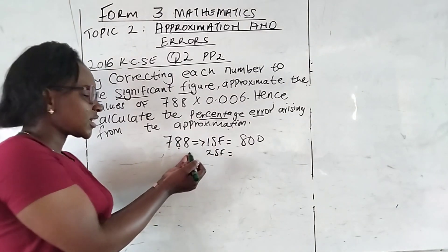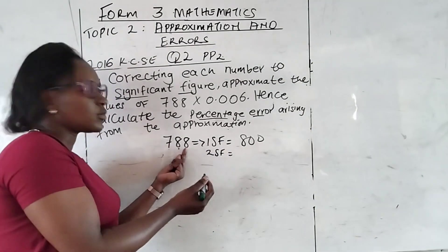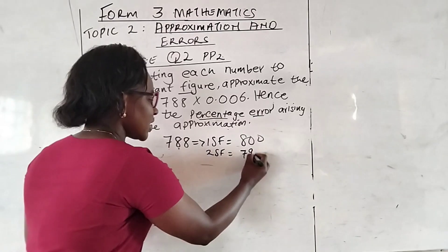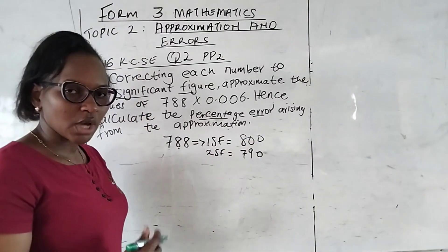For our case here, the number here is more than 5. So the difference becomes 9. So we have 7, 9, 0. I hope we are together.